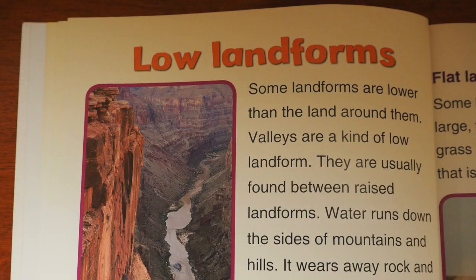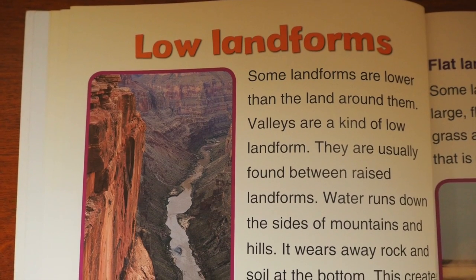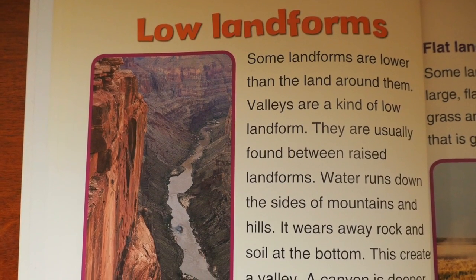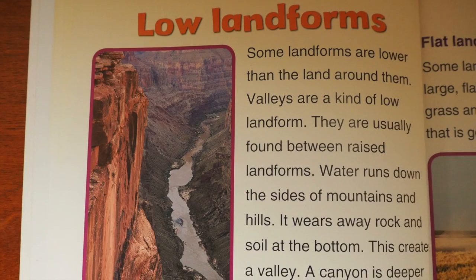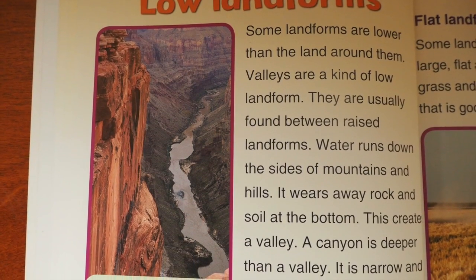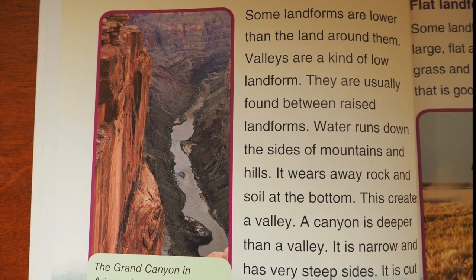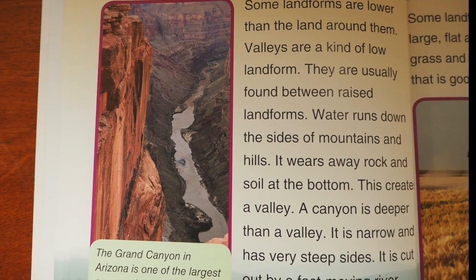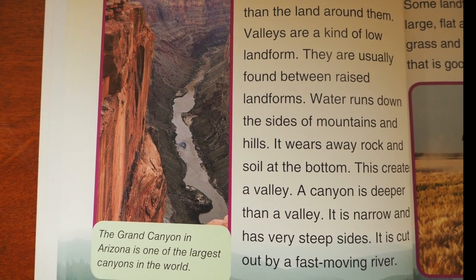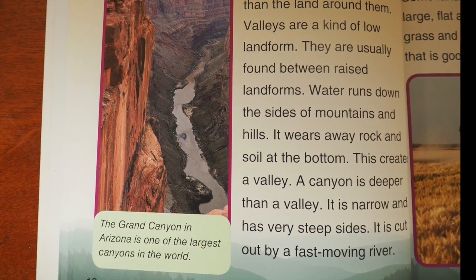Some landforms are lower than the land around them. Valleys are a kind of low landform, usually found between raised landforms. Water runs down the sides of mountains and hills, wearing away rock and soil at the bottom, which creates a valley. A canyon is deeper than a valley — it is narrow, has very steep sides, and is cut out by a fast-moving river.